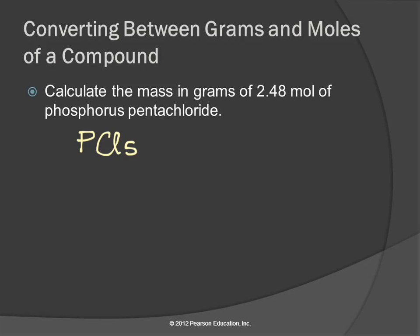So we have 2.48 moles of PCl5, and we want the mass in grams. So we want to multiply by grams and divide by moles so the units work out.